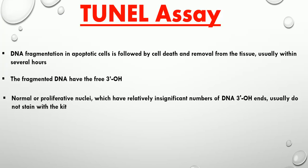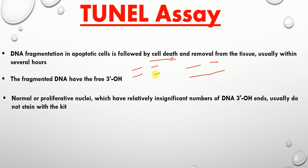The TUNNEL assay — as you know, apoptosis is recognized by DNA fragmentation. DNA fragmentation in apoptotic cells is followed by cell death and removal from the tissue, usually within several hours. The main hallmark of an apoptotic cell is fragmented DNA, and these DNA breaks can be either a double-stranded break or a single-stranded break.